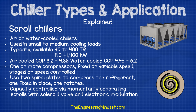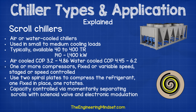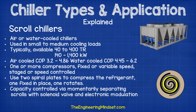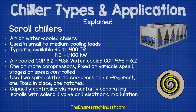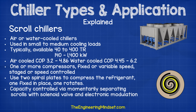Scroll compressors are used for air or water-cooled chillers and are used in small to medium cooling loads, typically available from around 40 up to 400 tons or 140 to 1,400 kilowatts. Air-cooled chillers typically have a COP of 3.2 up to 4.6, while water-cooled COPs might be 4.45 up to 6.2. They'll use one or more compressors, which can be fixed or variable speed and can be stage or speed controlled. They use two spiral plates to compress the refrigerant — one fixed, one rotating — and capacity is controlled by momentarily separating the scrolls using a solenoid valve and electronic modulation.